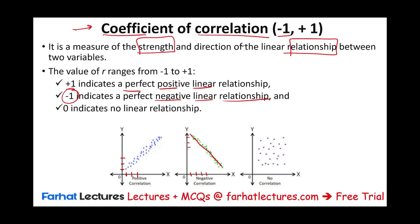We could also have a zero coefficient of correlation, meaning there is simply no relationship. We could increase marketing and sales could go down or go up — it's random all over the place. There is no relationship between marketing and sales. This is called the coefficient of correlation, and it ranges between negative one and one.